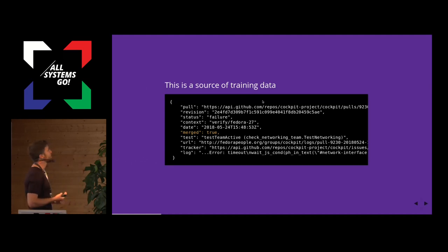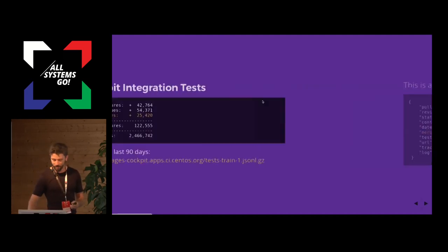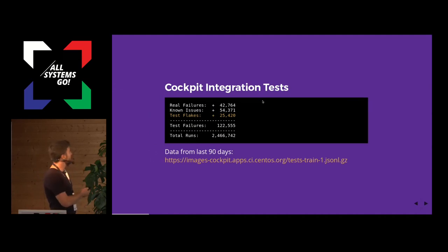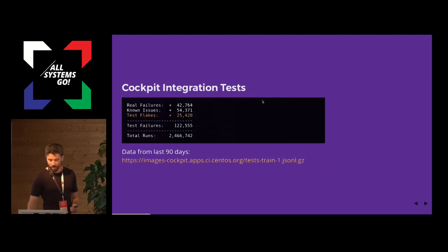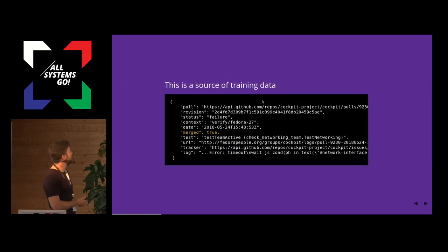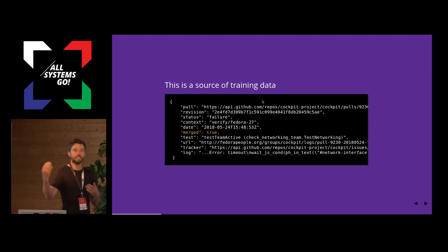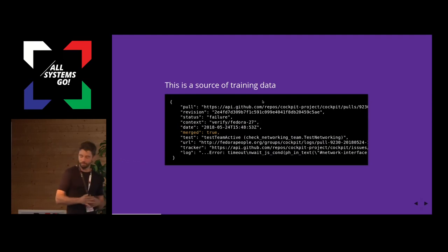And this is a source of training data. Once you have 2,400,000 records and you have this kind of data about some aspect of human behavior, you can then start to train machines to learn from that.